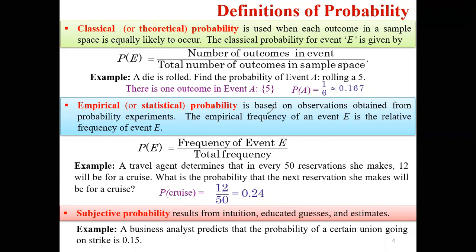Empirical or statistical probability is purely based on observation. Instead of all possible outcomes from theory, we observe experimentally how many times an event occurs. Empirical probability is based on actual observation and experiment, whereas classical probability is based on what we exactly know about the sample space.